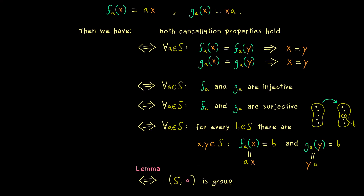We have proven that for a finite semi-group, the cancellation properties already define a whole group — it is not possible to have a finite semi-group with the cancellation properties that is not also a group. This is a nice result and definitely something you should remember. Let's continue our discussion of groups in the next videos. I hope we meet there again — have a nice day, bye bye.